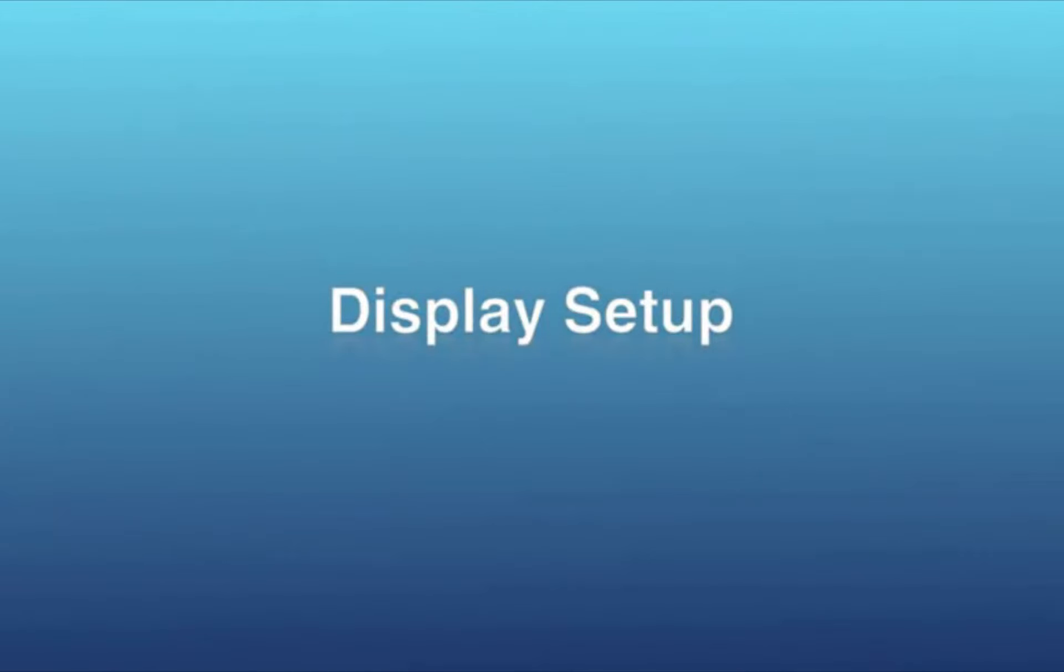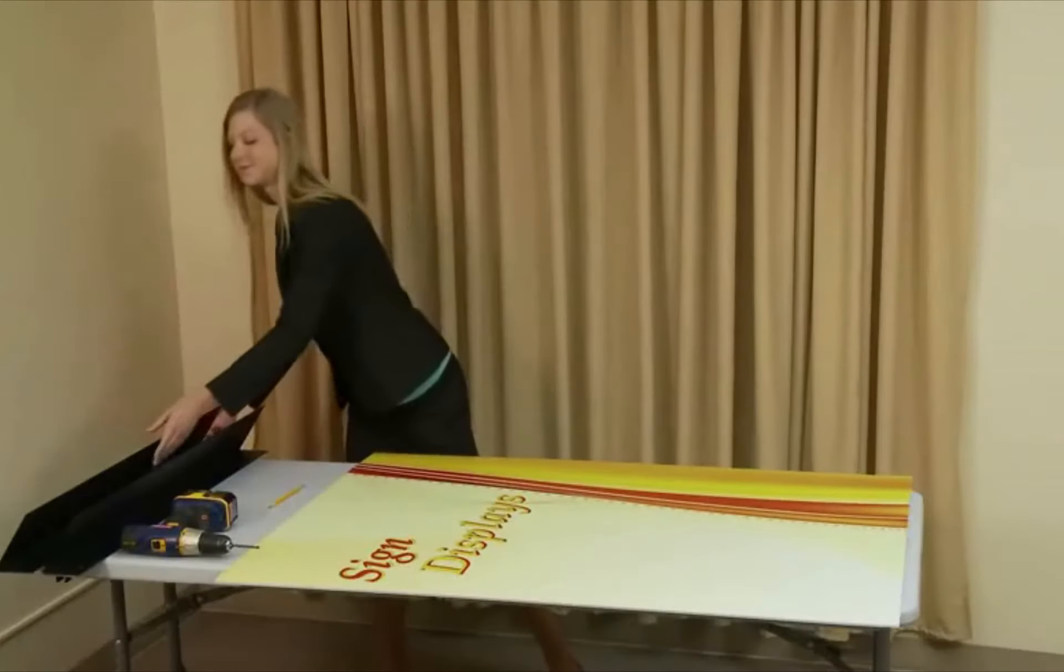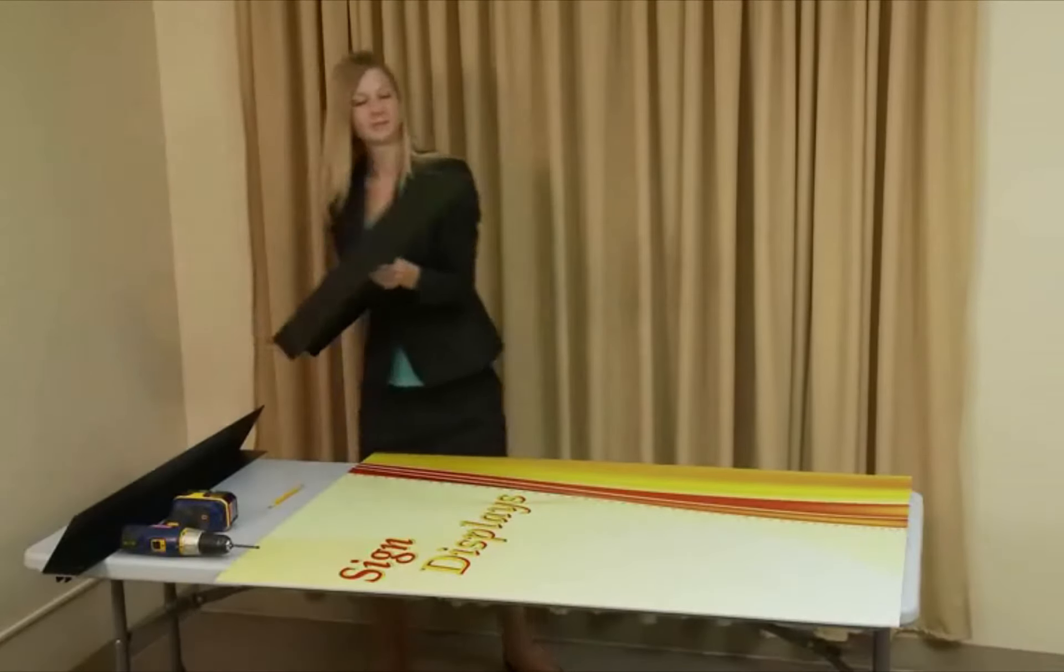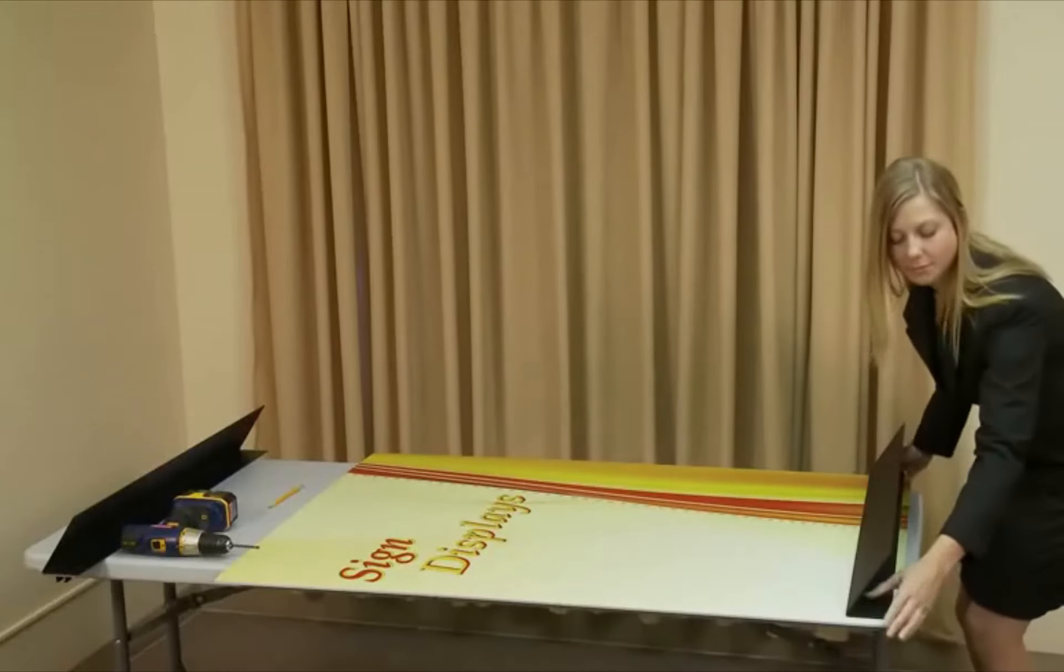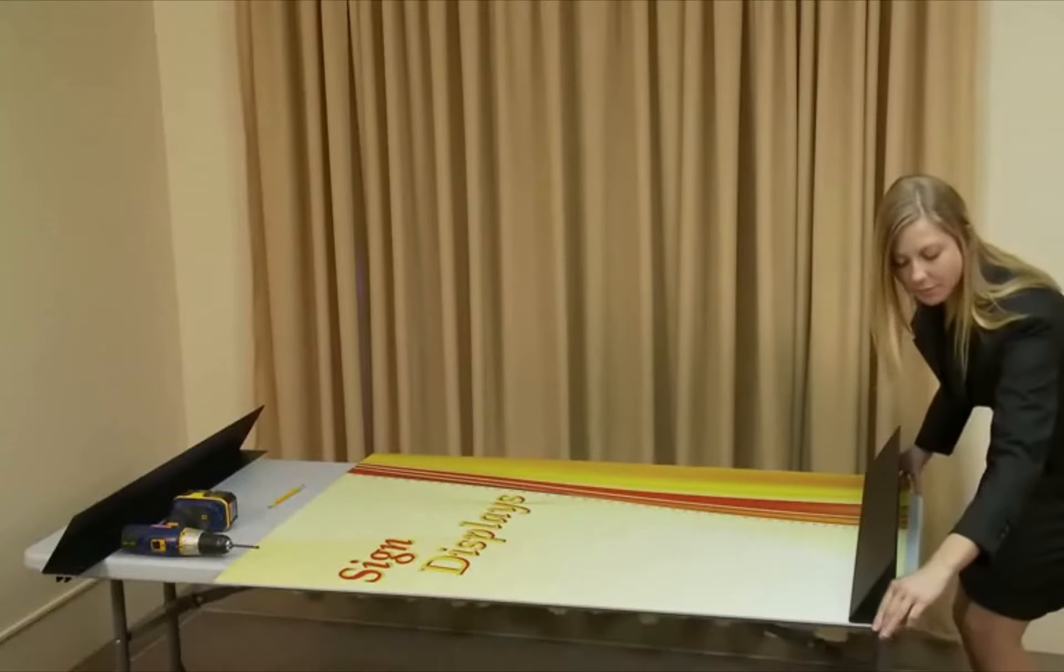To display your graphic in the three-foot freestanding floor display, begin by opening the box and placing all the parts on a clean, flat surface. Installation requires that you create holes in your substrate to bolt the two feet together.